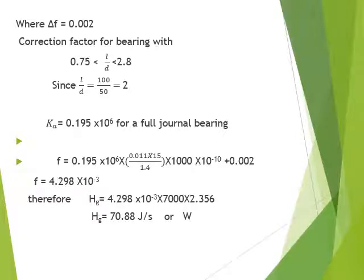Here δF is 0.002 because our L/D ratio is 100/50 = 2. For this L/D ratio range, δF = 0.002, which is available in the data handbook. Ka = 0.195 × 10⁶ for a full journal bearing (β = 360°). Substituting all these values, the coefficient of friction F comes out to be 4.298 × 10⁻³.